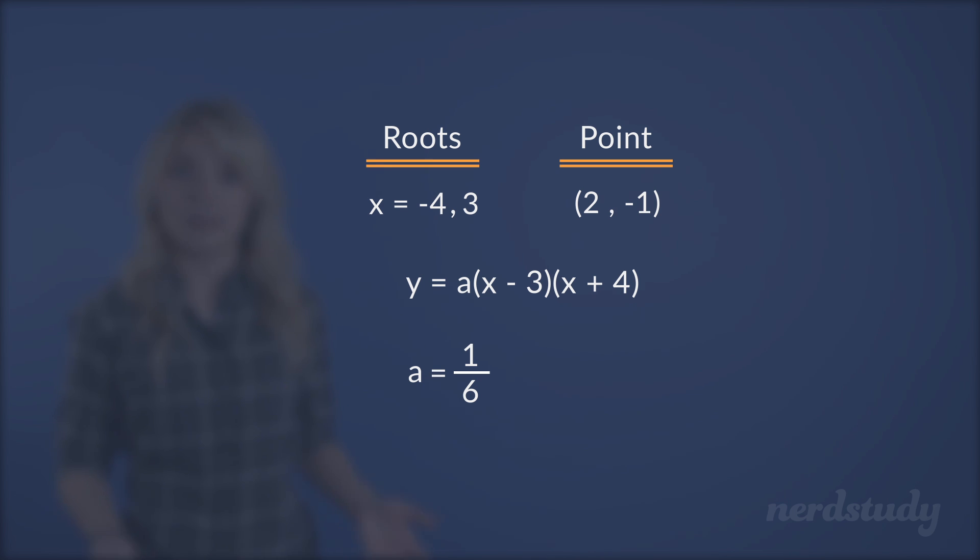So all we have to do now is substitute our newfound a value into our factored form, and we'd get y equals 1 over 6 times x minus 3 times x plus 4. And there's our quadratic equation.